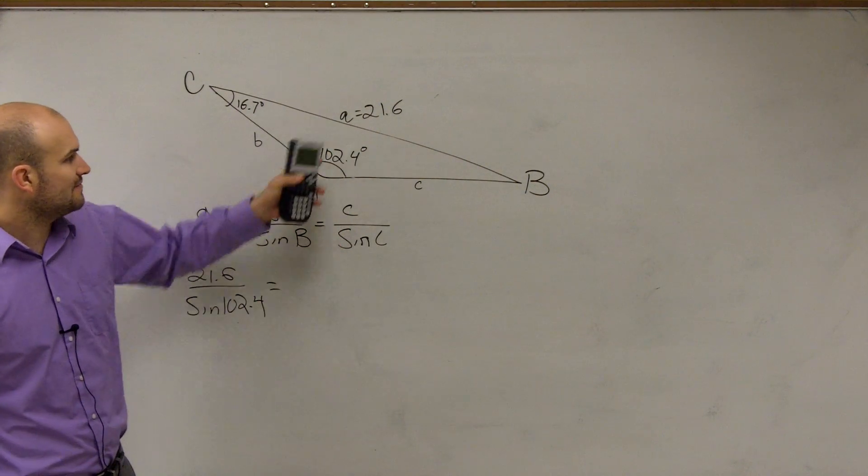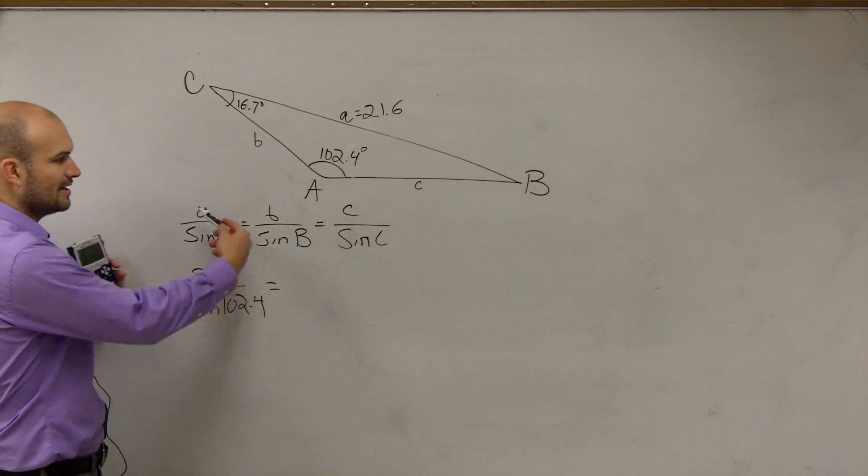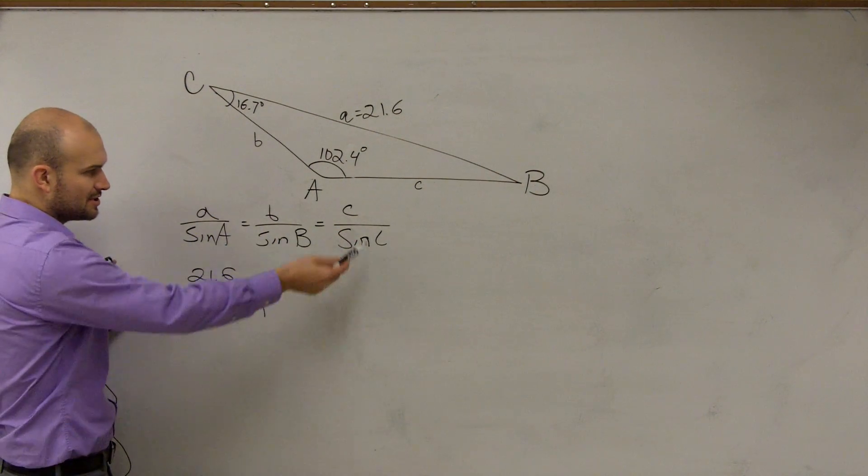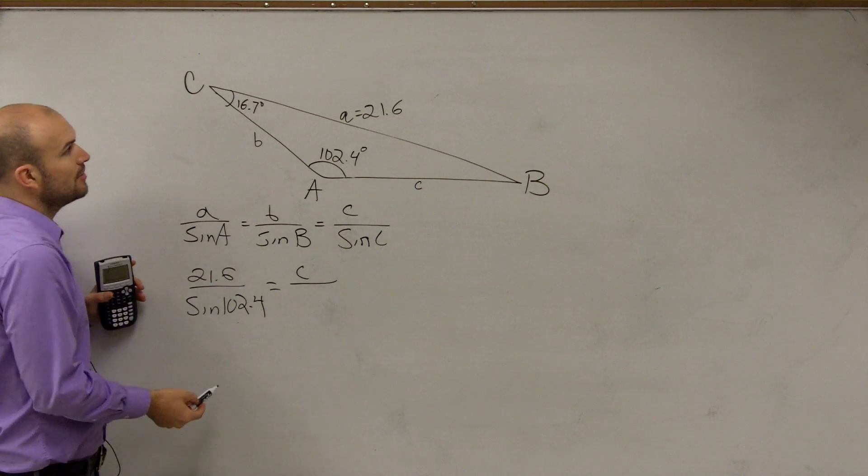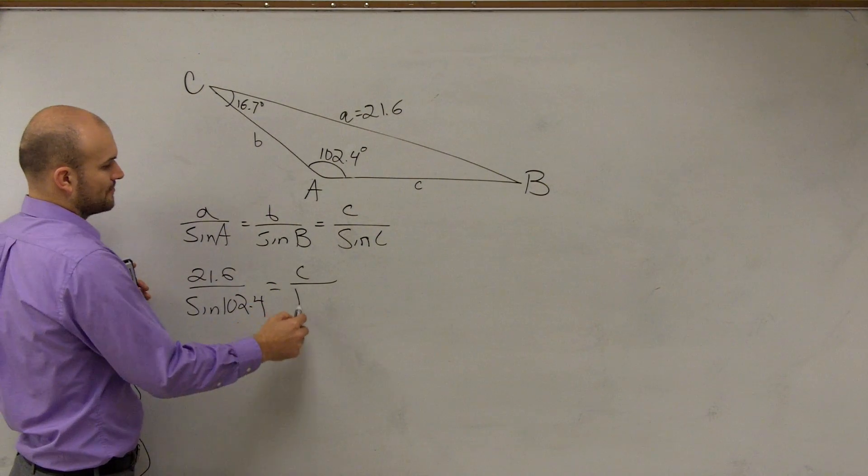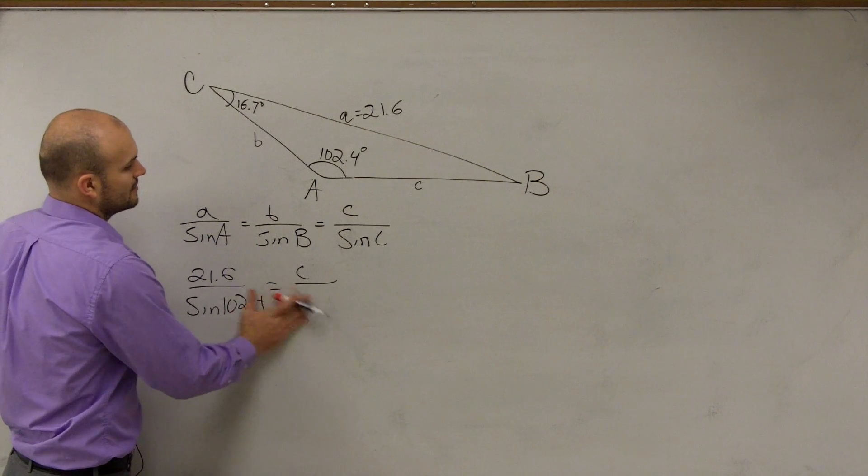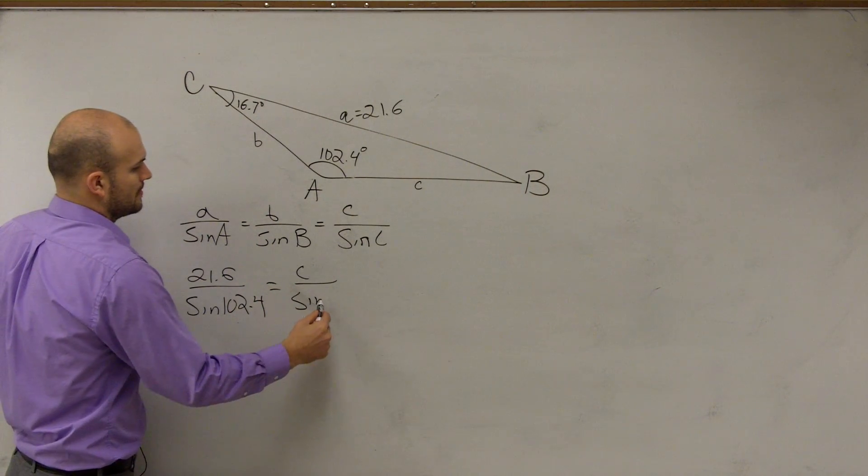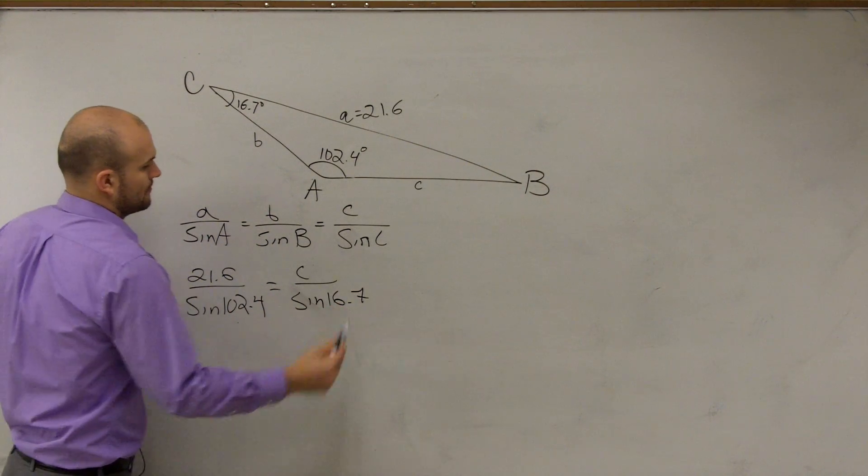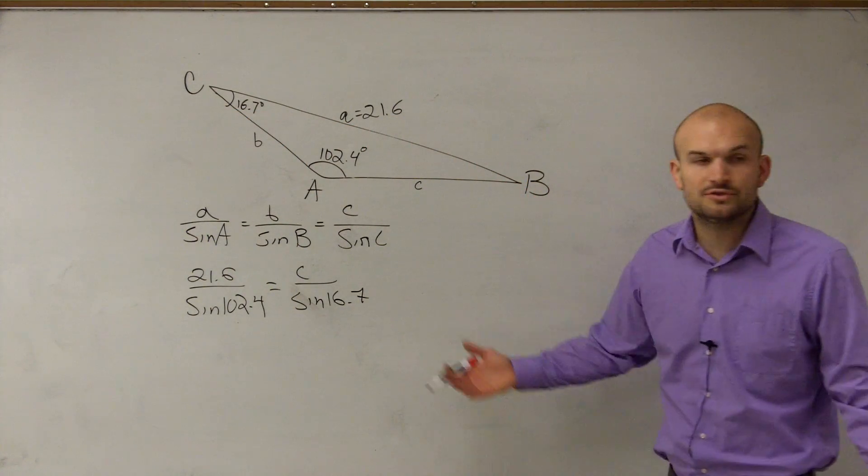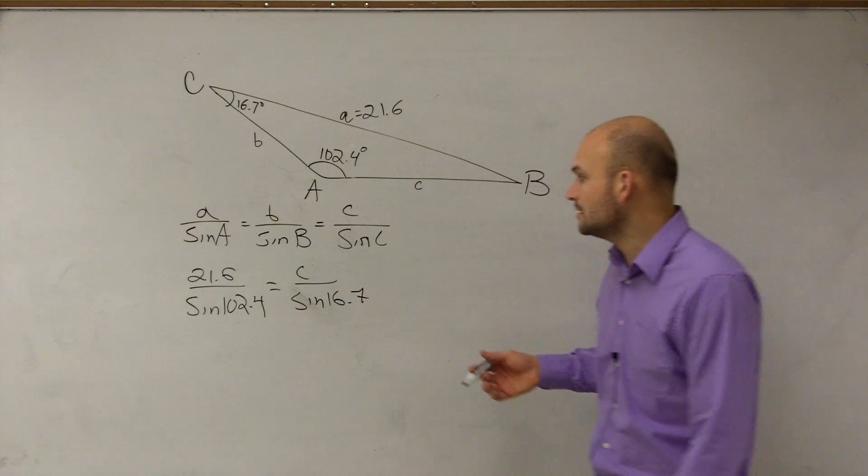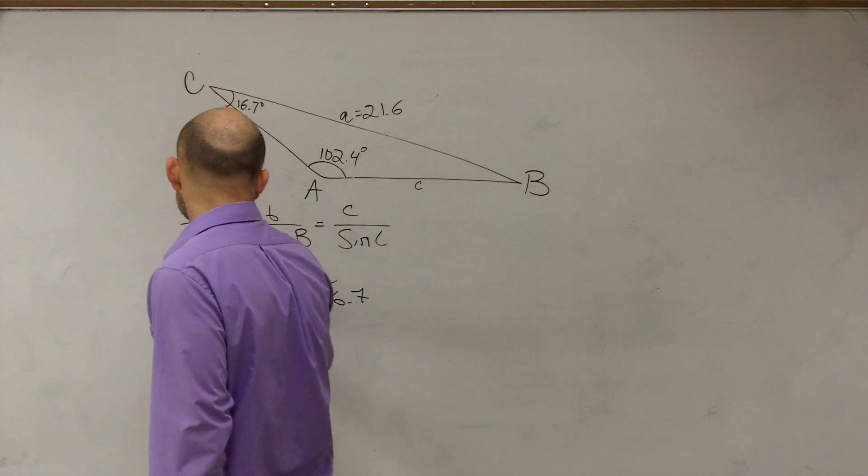All right, so in this problem we know that we have A and sine of A, so I write 21.6 over sine of 102.4. But in this case we have C, but we don't have anything with B. So we're not going to write our ratio B, we're just going to go right to C, which we don't have the sine of C but we have 16.7. All right, so now we can use this information to apply the Law of Sines, and we'll use cross multiplication.